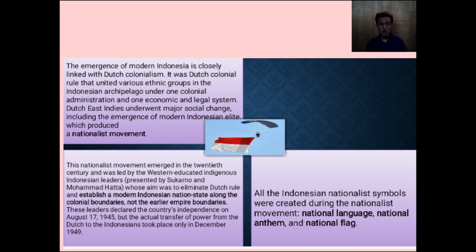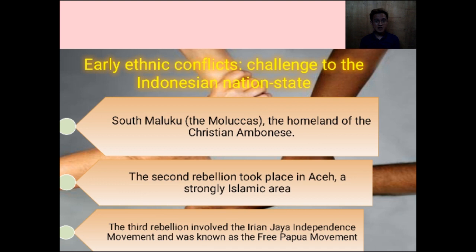Early ethnic conflicts challenged the Indonesian nation state. Indonesia was at first federal, which would cater to different regional and ethnic interests. However, a few ethnic groups rebelled against the central government and sought to establish an independent state. The first serious incident was in South Maluku, the homeland of the Christian Ambonese. In the eyes of Indonesian nationalists, this was seen as a Dutch plot, and after the rebellion Indonesia became a unitary state, giving more power to the central government in Jakarta.